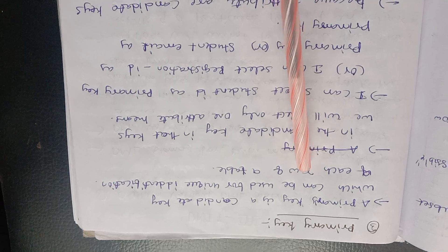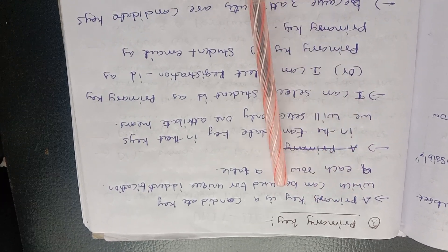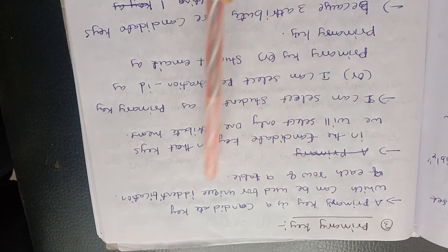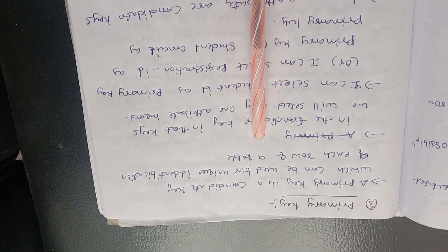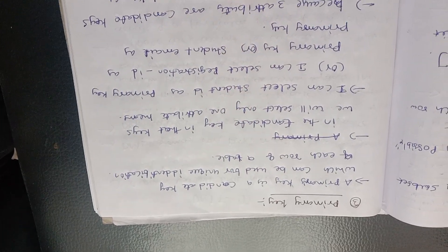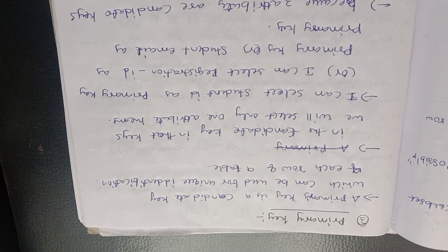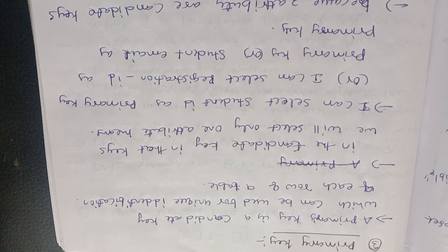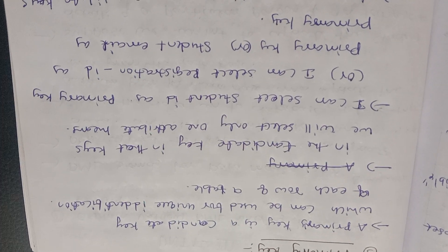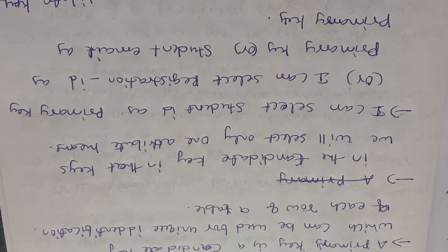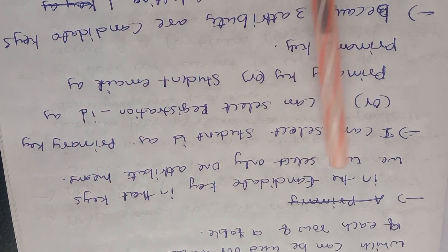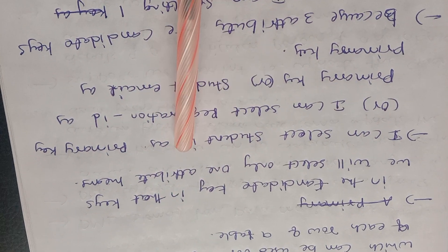The third type is primary key. A primary key is a candidate key which can be used for unique identification of each row in a table. It can be used for unique identification purposes.